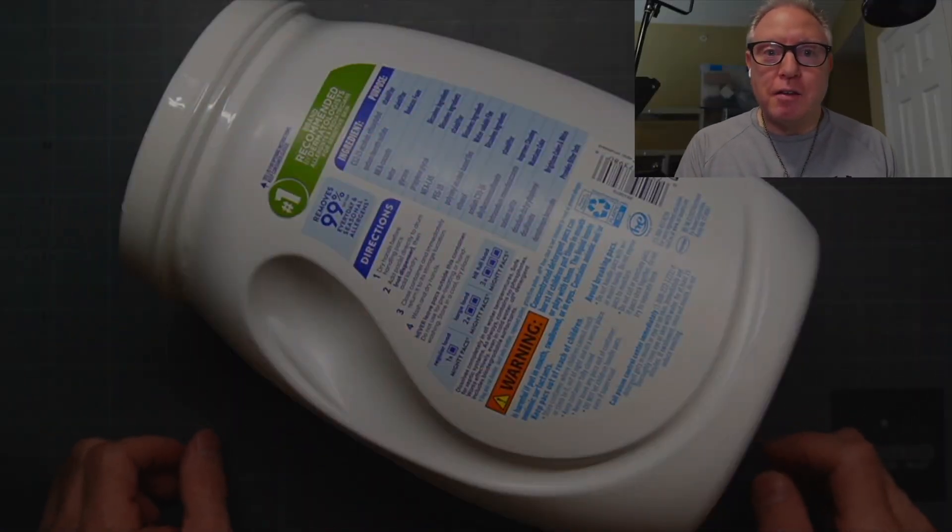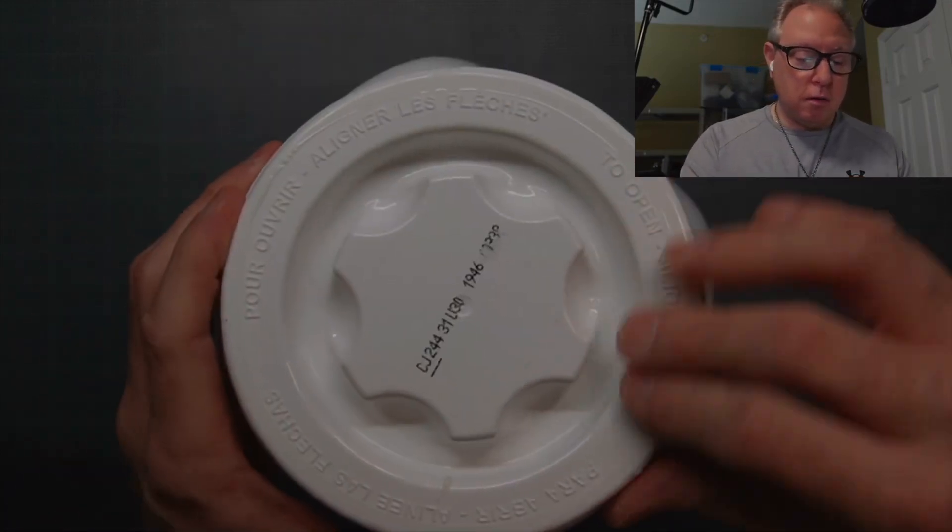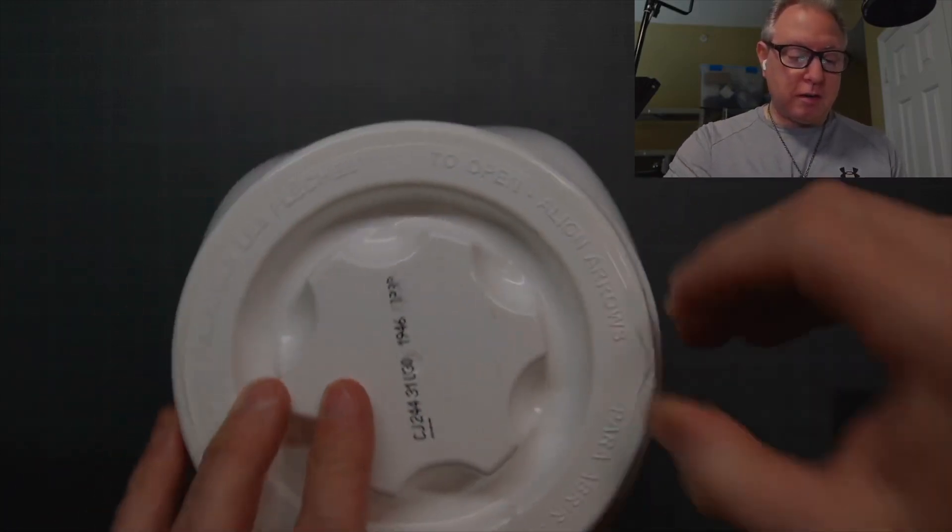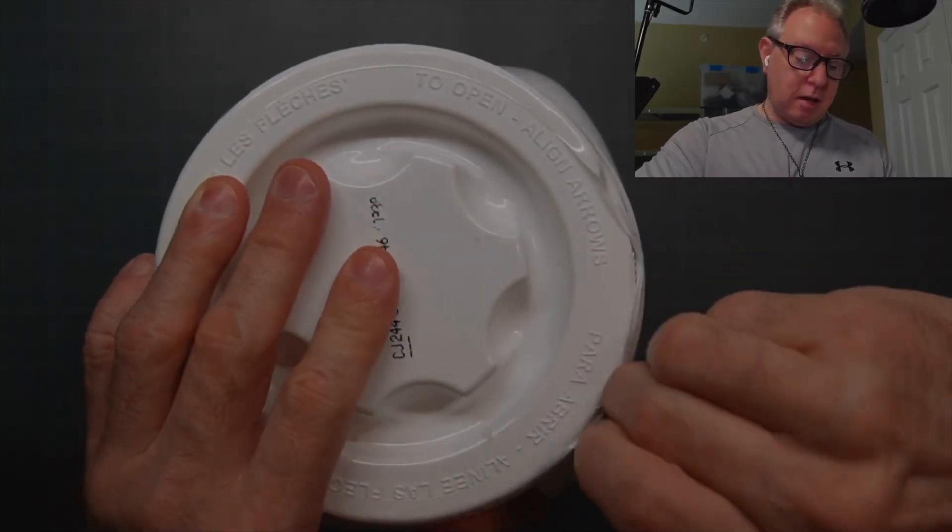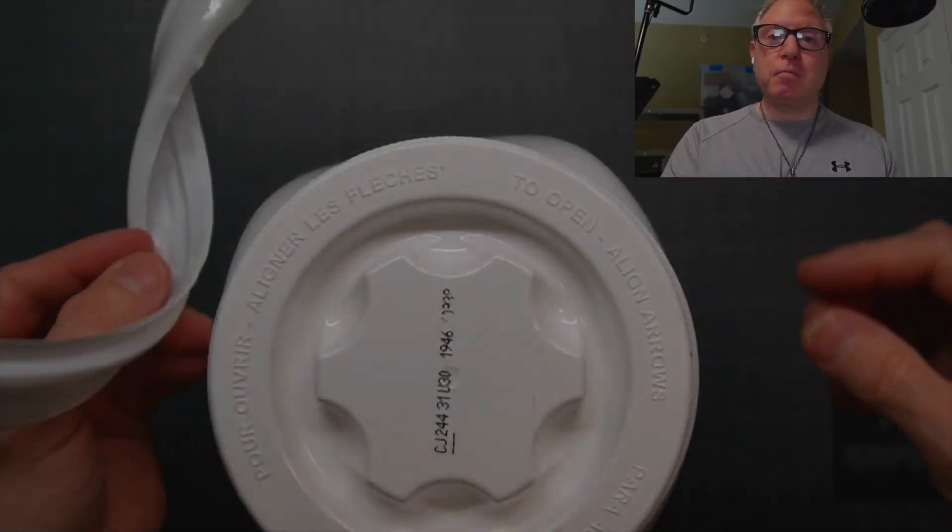So here we have this laundry detergent and we want to open it. Now of course it has the plastic protector on it. But that we can peel right off.